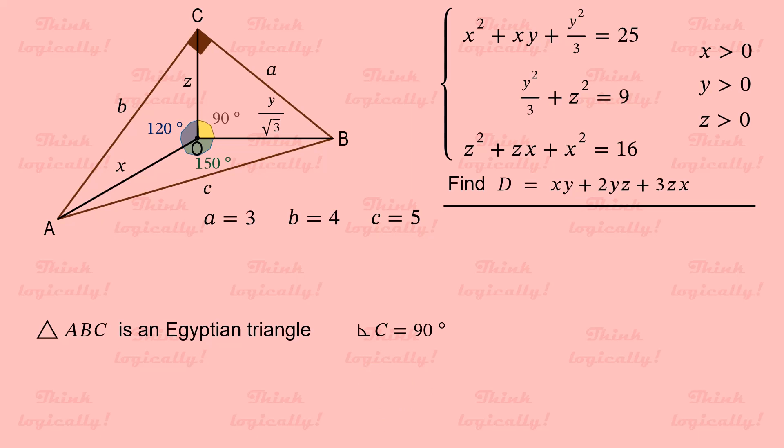Let A capital be the area of triangle ABC. Since ABC is a right angled triangle. Its area is just half product of its legs. A capital equals half of A times B. Substituting the values of A and B. We find that the area of triangle equals 6.